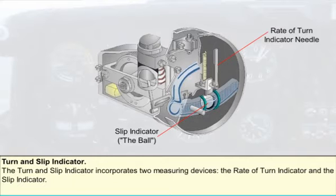One of these — the rate of turn indicator, commonly shortened to turn indicator — uses a rate gyro to measure rate of turn about a vertical axis. The other, the slip indicator, is a very simple pendulous device used mainly to show whether a turn is balanced, whether the angle of bank is correct for the true airspeed and rate of turn, and if not, to indicate the extent of slip or skid.